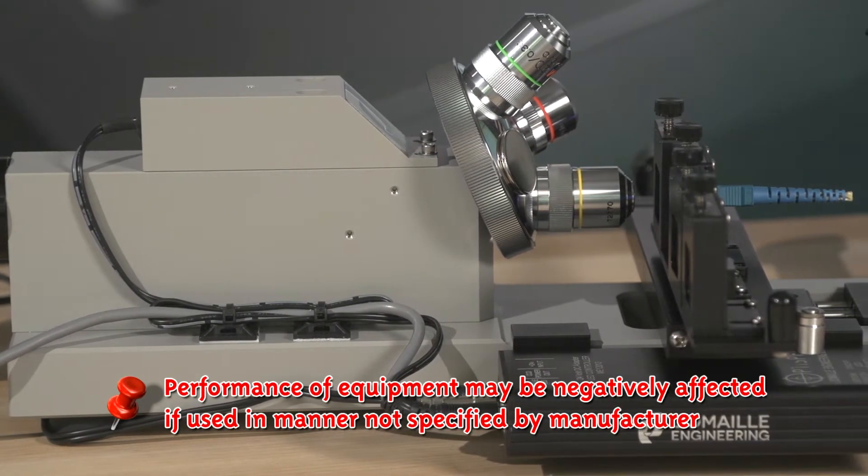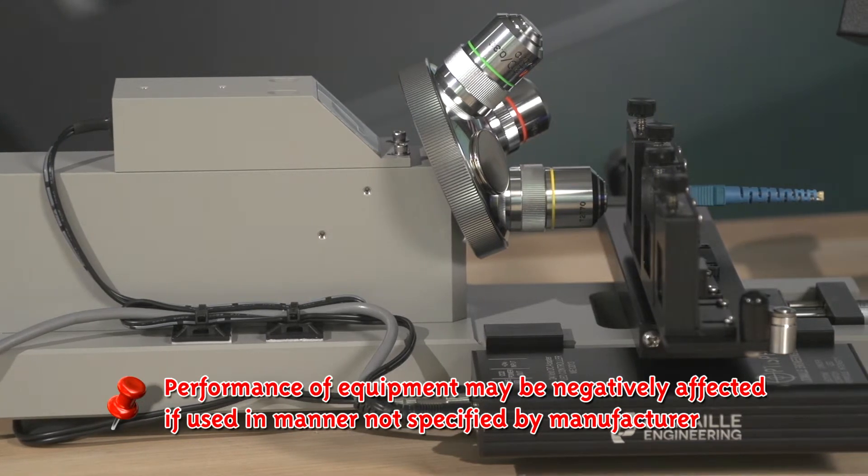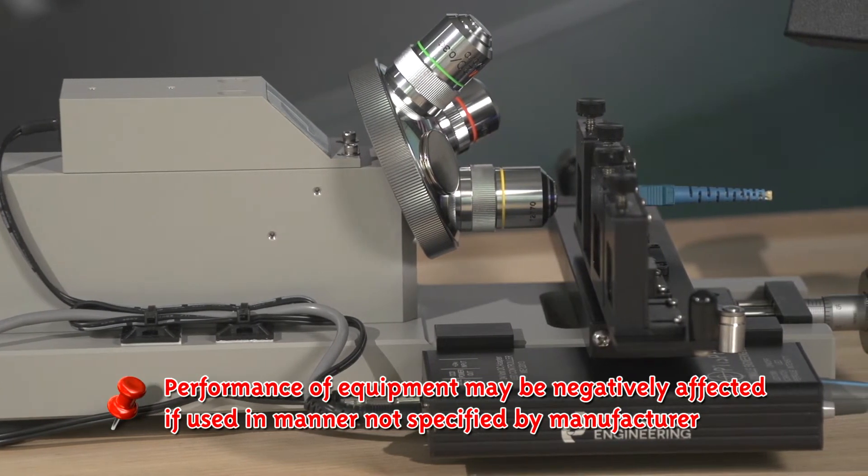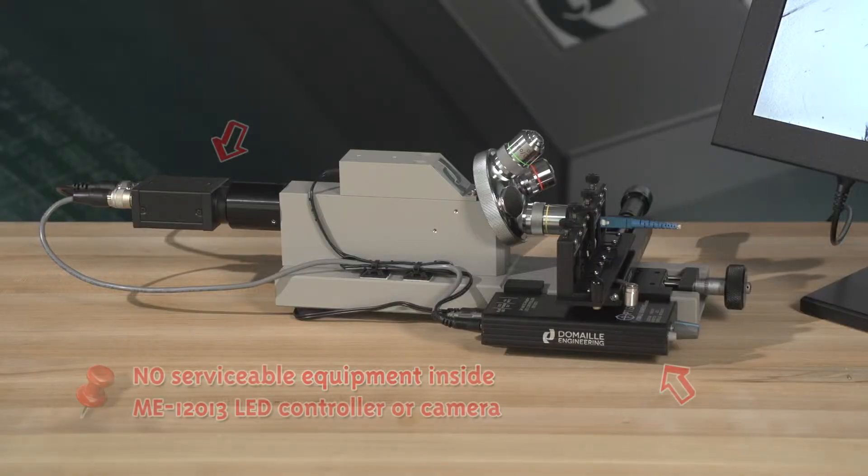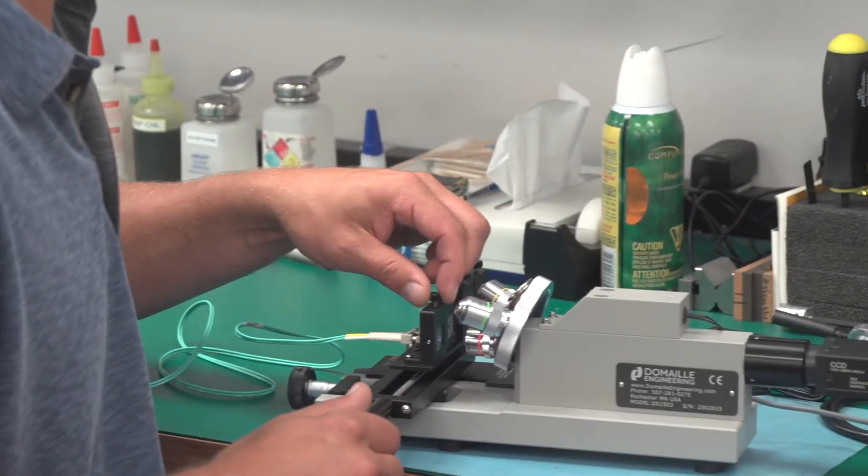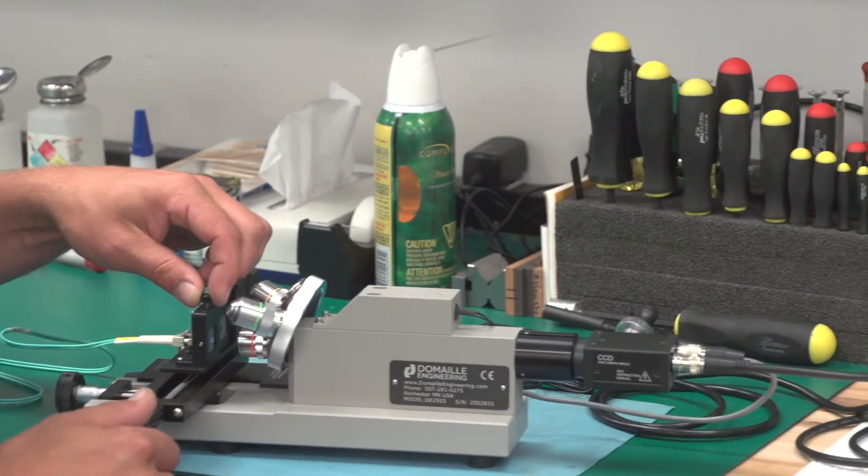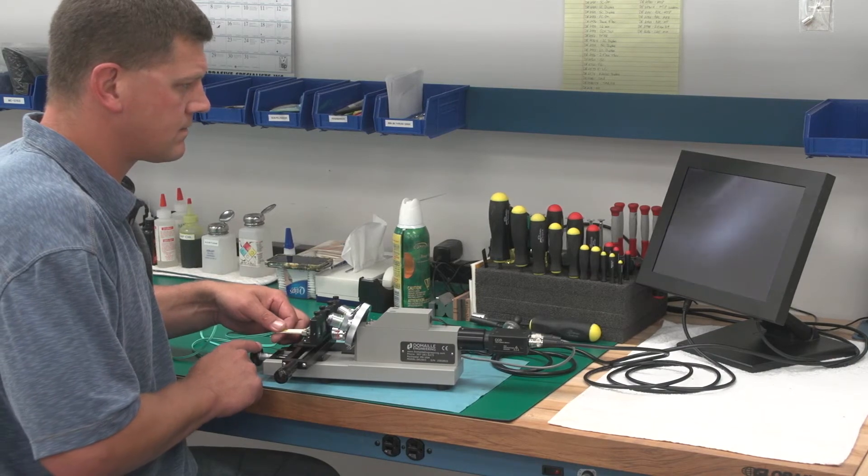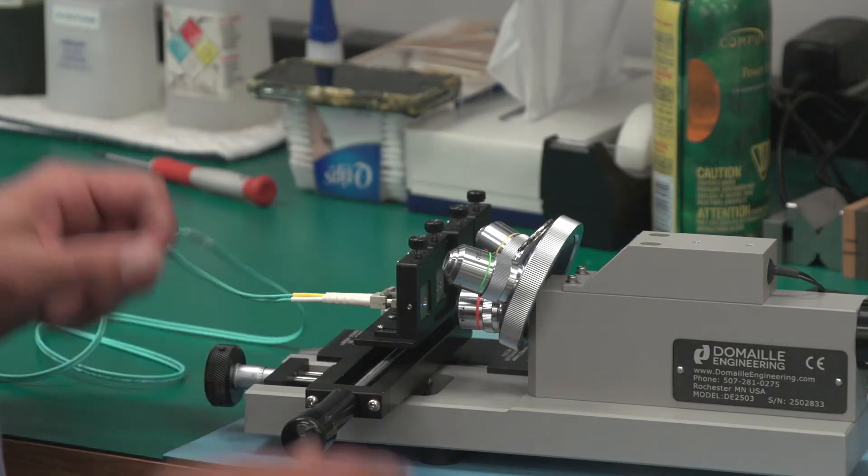If equipment is used in a manner not specified by the manufacturer, the performance of the equipment may be negatively affected. There is no serviceable equipment inside the ME12013 LED controller or camera. In the event of malfunction or when other maintenance is required beyond the steps documented in the manual, service must be done by a qualified DeMail engineering technician.